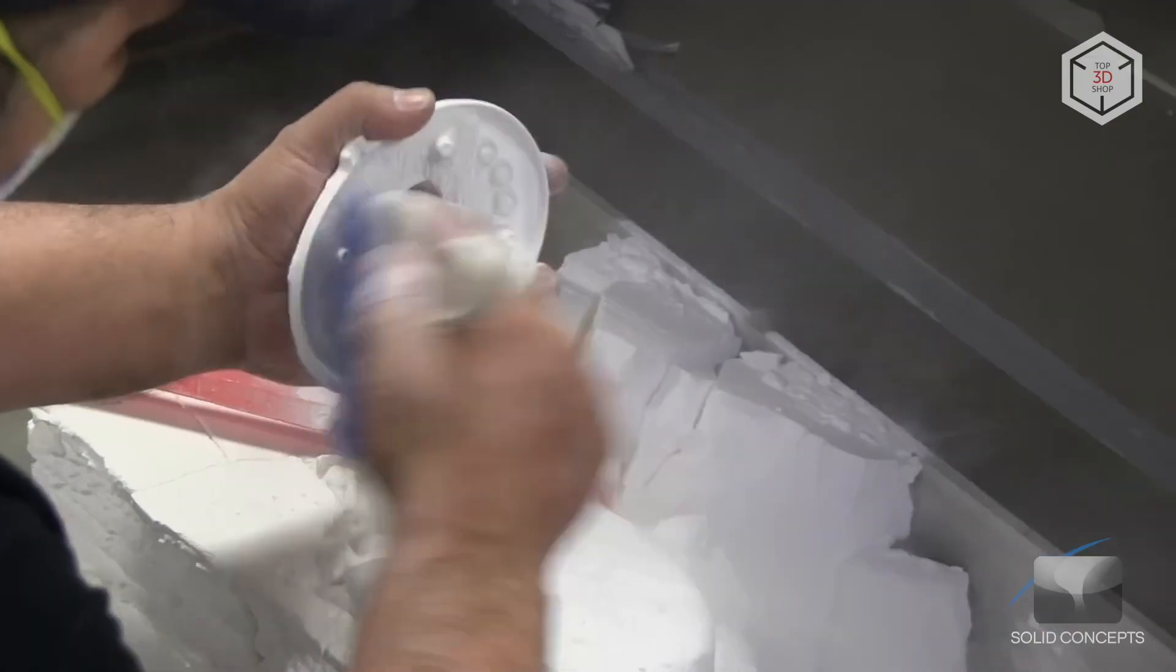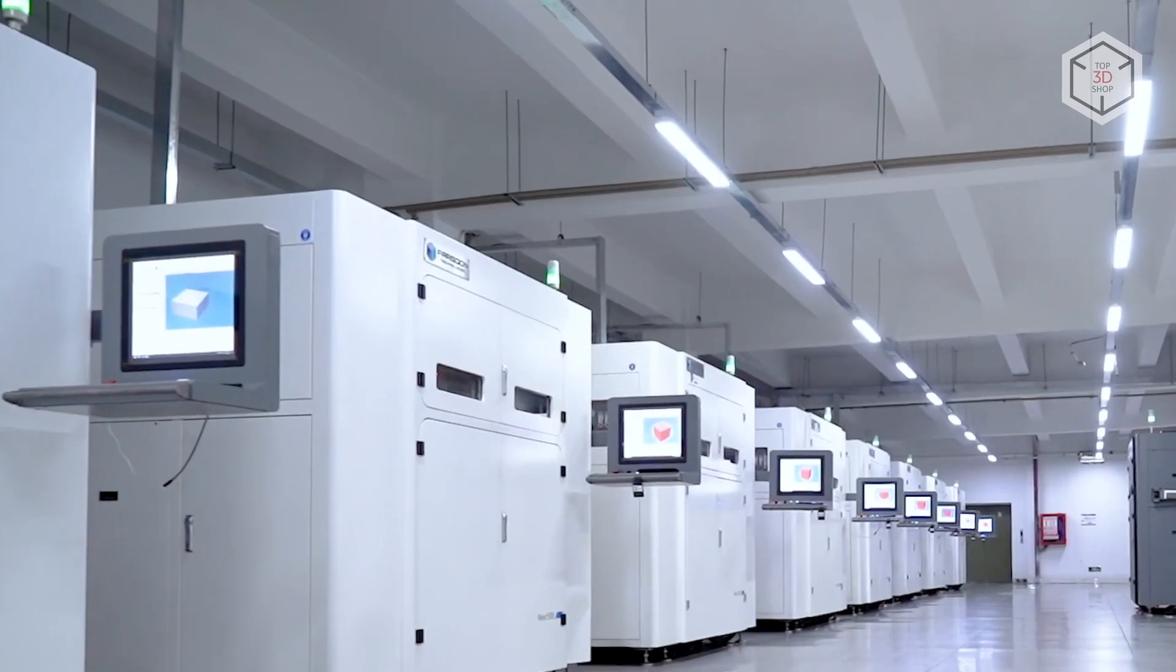All SLS 3D printers' workflows seem to be pretty similar. They can differ in such parameters as the type and power of lasers employed, the build volume, and the types of compatible powders. Still, there is one main feature which allows dividing such machines into two main types – that is, their size.